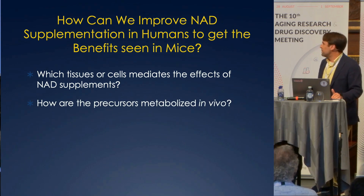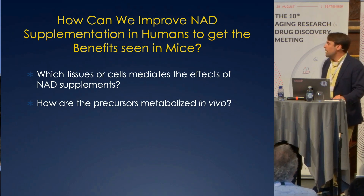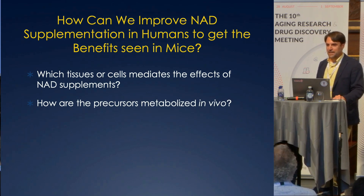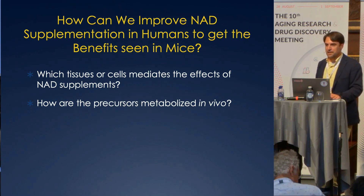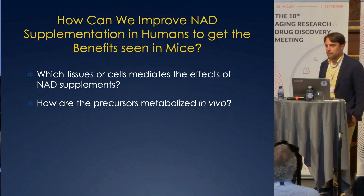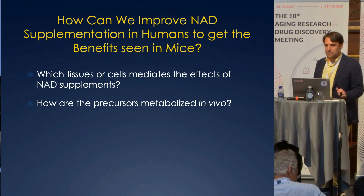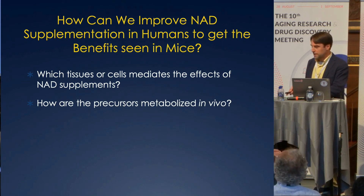We need to know a lot more about how the precursors are metabolized in vivo. We've been doing a lot of this work in mice, and the answers have been really surprising in many cases. Oral precursors are ending up in the microbiome, getting disassembled, rings separated, and reassembled by the time they show up in tissue NAD pools. This argues that it's going to dramatically affect the outcome depending on how you deliver these things and maybe what your microbiome composition is. We need this kind of data in humans, which we don't have yet.